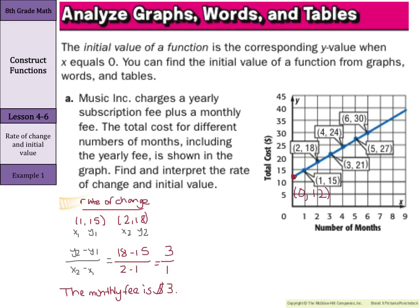So our initial value by extending the line and looking at where it crosses our y-axis is 12. What does this mean? This is our yearly fee. The yearly fee is $12. So we have a $12 per year plus $3 per month.